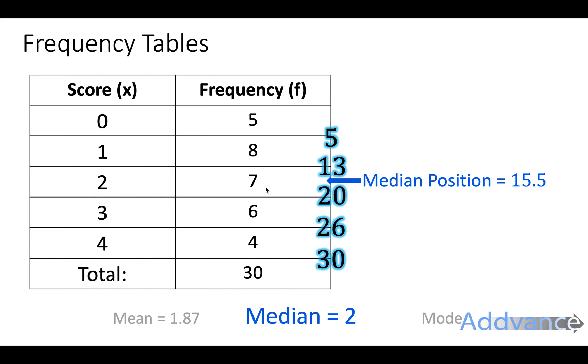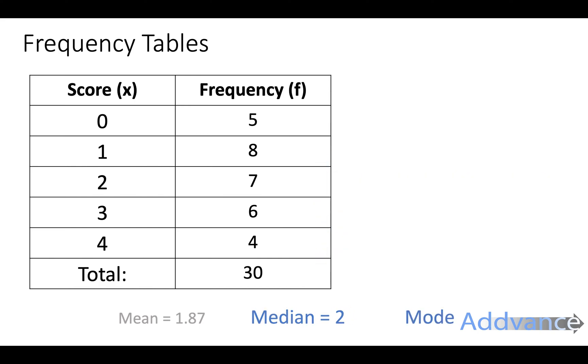Now finally, we're interested in the mode, and the mode is the most common number. The one with the highest frequency is 1. 1 occurs 8 times, that's the most any number occurs. So the mode is 1.